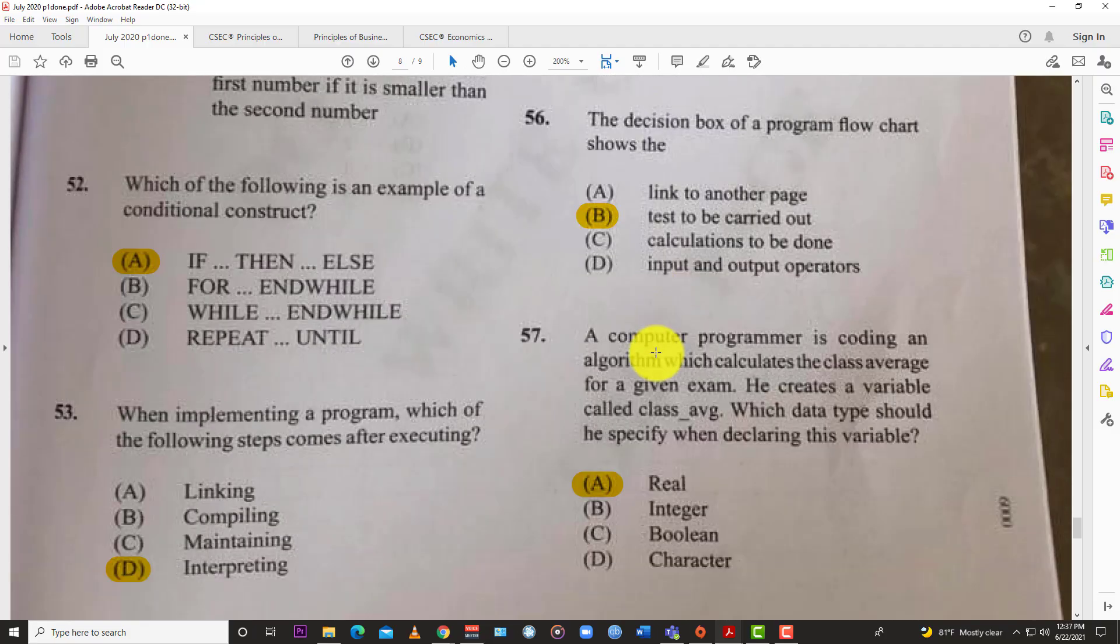Question 56: The decision box of a program flowchart shows the B, test to be carried out. It's a flowchart, so it shows all the different branches in which what can be done one after the other. What's to come is going to be further down in the flowchart.